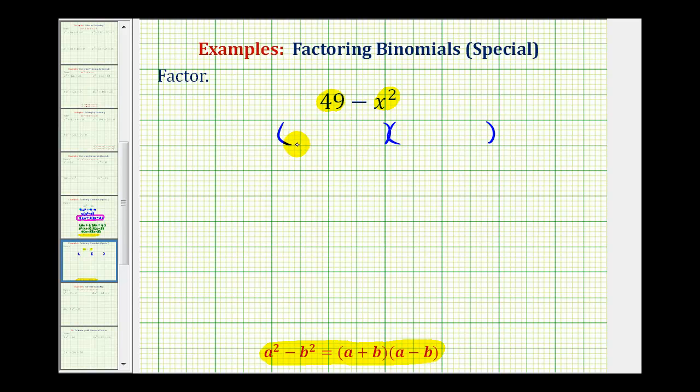The terms in the first position will be the two equal factors of 49, and since 7 times 7 is equal to 49, we have a 7 here and a 7 here. The two equal factors of x squared are x and x, and one's a sum and one's a difference. So this is one correct way to factor 49 minus x squared.